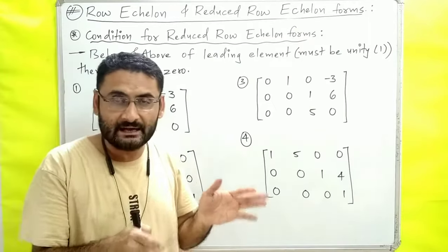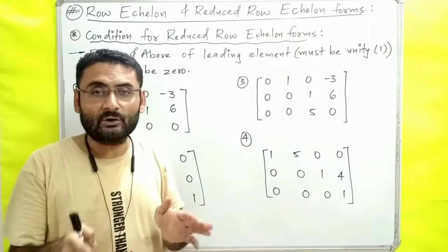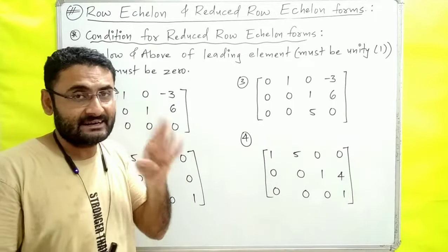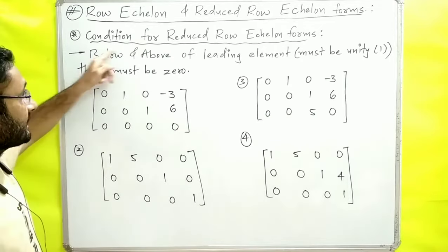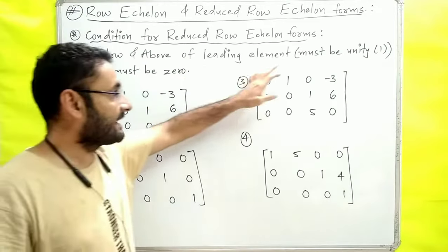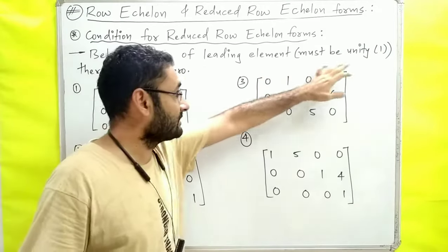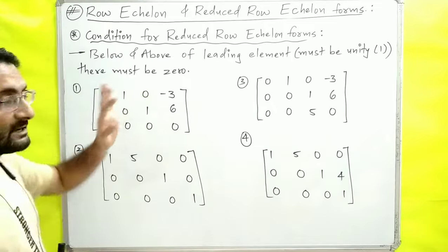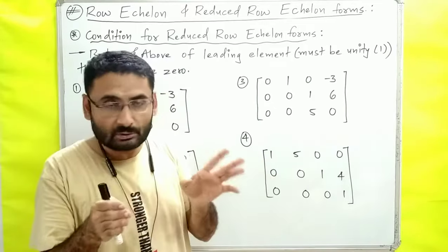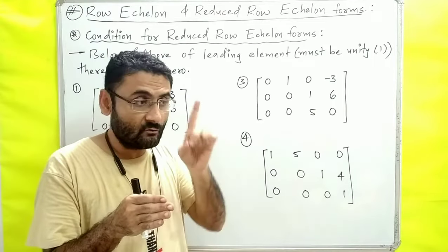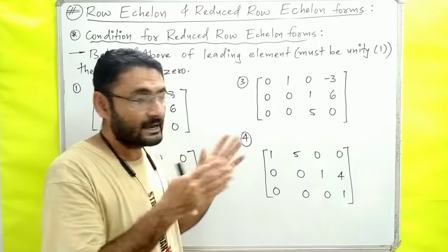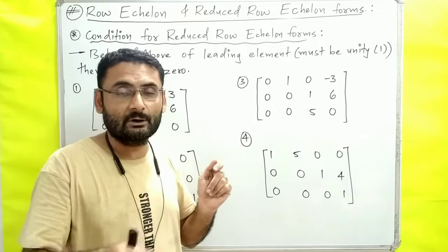One more thing: the row echelon form we can also call the upper triangular matrix. Now, for whatever matrix we have, how do we check if it is reduced row echelon form or not? That matrix must satisfy one condition. The condition for reduced row echelon form is: below and above the leading element, all entries must be zero, and the leading element must be unity — equal to 1. If this is satisfied, we say the matrix is in reduced row echelon form.